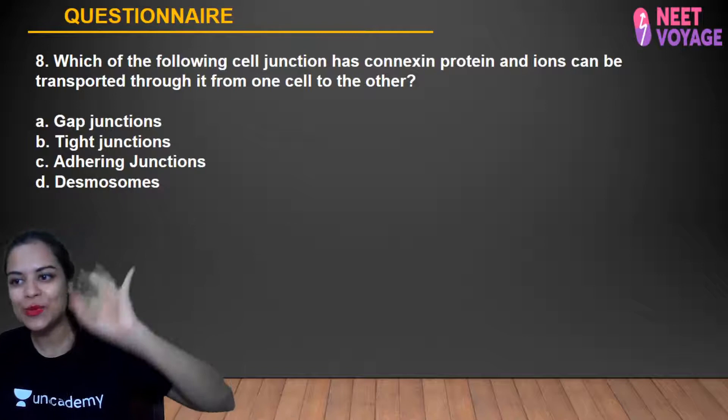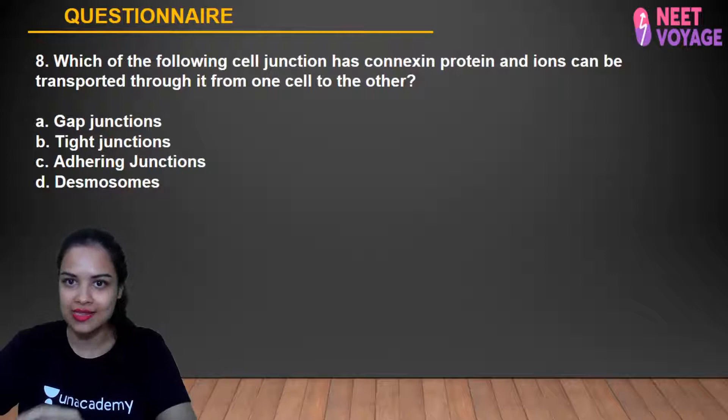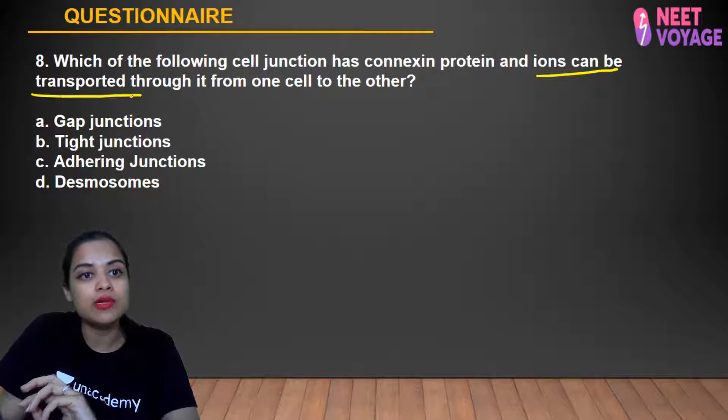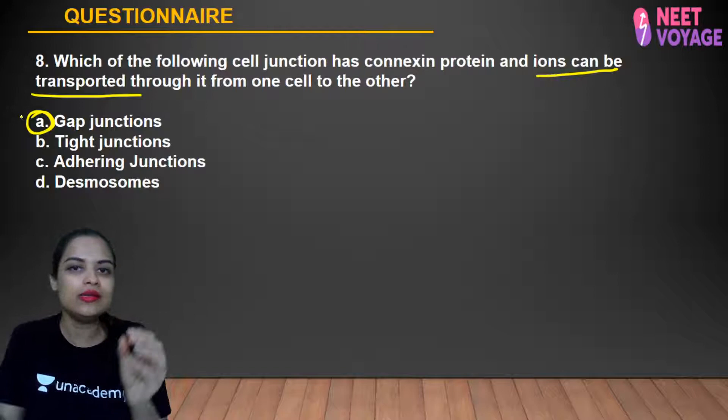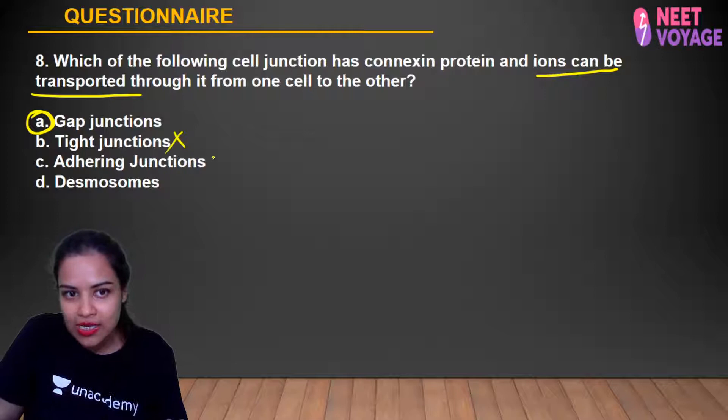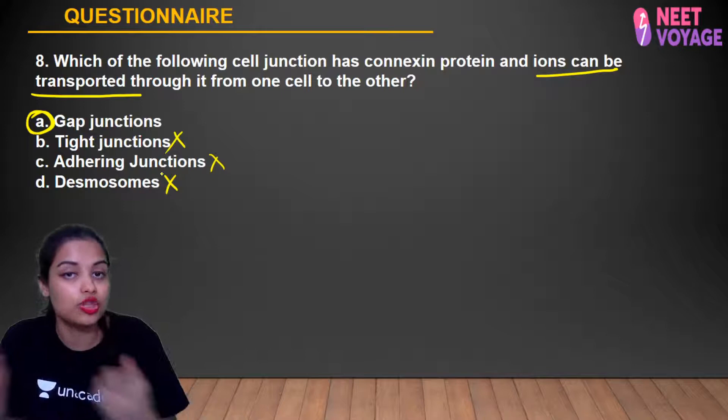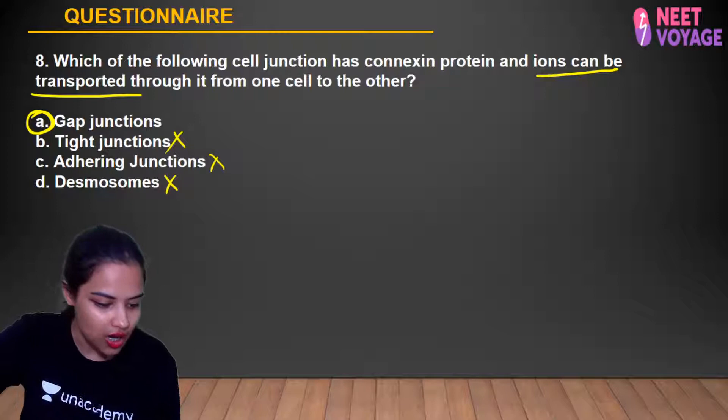Question 8: Which cell junction has connexin protein and allows transport of ions? The key here is intercellular exchange of material between two cells — only gap junctions allow this. Tight junctions do not permit exchange. Adhering junctions (including desmosomes) only attach cells together. Gap junction is the correct answer. Tanusha, Anshika, Samreen, Simran, Shashank, and Sabah gave the right answer.